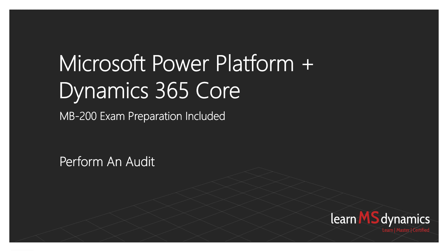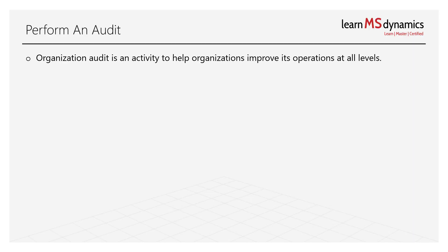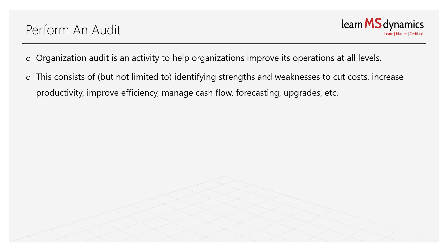Welcome to this tutorial where you will learn about how to perform an audit, what things fall under an audit, and why it is important for an organization. An organization audit is an activity to help organizations improve their business processes and operations at all levels — not just limited to IT, sales, or any single business function, but across the entire organization.